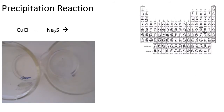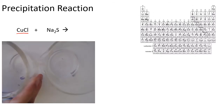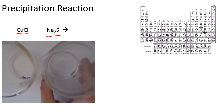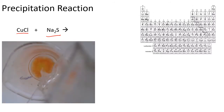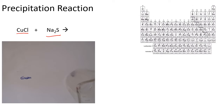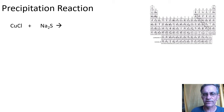Let's do this reaction. In this beaker is the copper(I) chloride — CuCl — and you can see it's a colorless, clear liquid. The other beaker contains the sodium sulfide. I'm going to pour them together. When you pour them together you get an orange solid forming. So we formed an orange solid — what the heck is that?